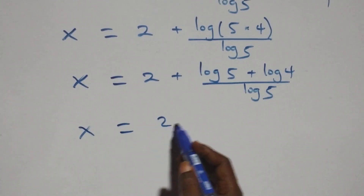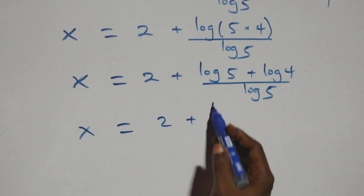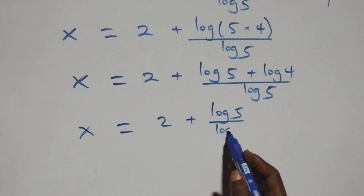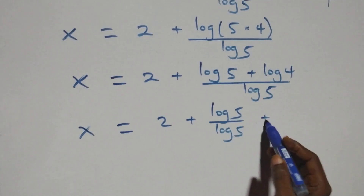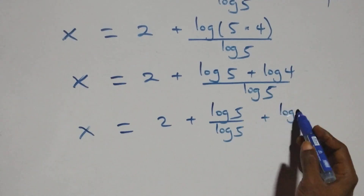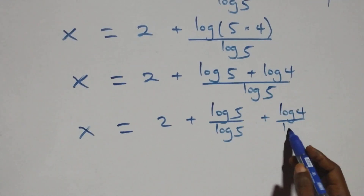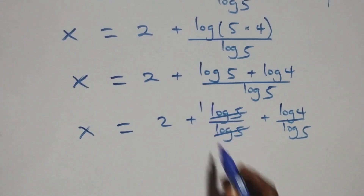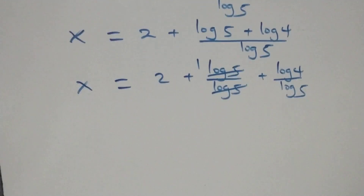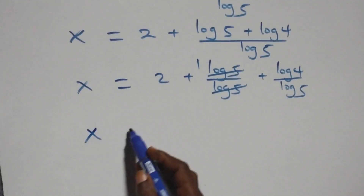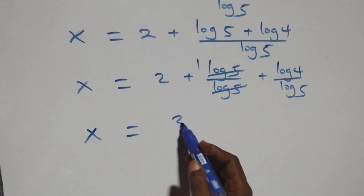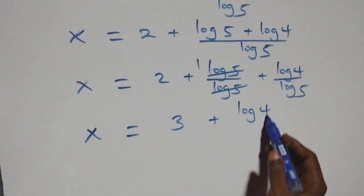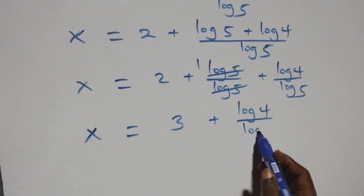We separate this into two fractions: x equals to 2 plus log 5 over log 5 plus log 4 over log 5. Then log 5 over log 5 cancels to give 1. So we have x equals to 2 plus 1, that's 3, then plus log 4 over log 5.